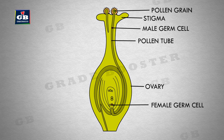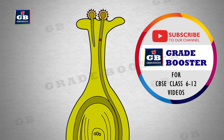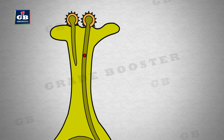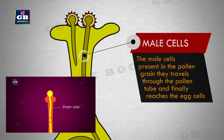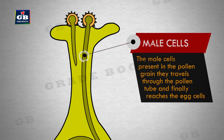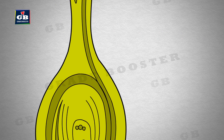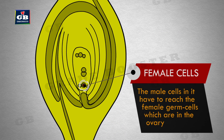Pollen grain germinating: once the pollen lands on a suitable stigma it produces a long tube that reaches the ovule. The male cells present in the pollen grain travel through the pollen tube and finally reach the egg cells that are seated in the embryo sac of the ovule. The male cells have to reach the female germ cells which are in the ovary.